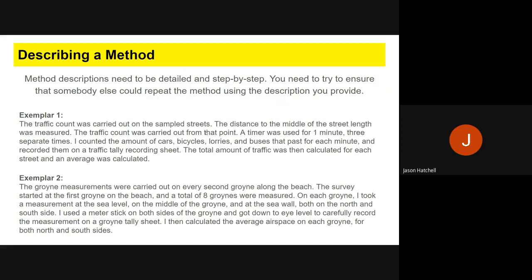I used a meter stick on each side of the groin. I got down to eye level and carefully recorded the measurement of airspace. Then I calculated the average airspace on each groin, north and south, and that gave me an overall number. As you can see, both exemplars take you through step-by-step exactly what I did to describe the method used.